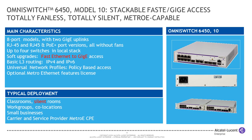The 6450 Model 10 comes in two variants: FastE software-upgradable to GigE, or straight GigE. This model gets deployed a lot in classrooms. Those of you in the K-12 education market know the classroom has become very digital. Having a switch that delivers the needed Ethernet ports without a lot of noise in the classroom is often seen as a tremendous benefit. If you need a quiet GigE switch, the 6450 Model 10 is certainly a front runner.